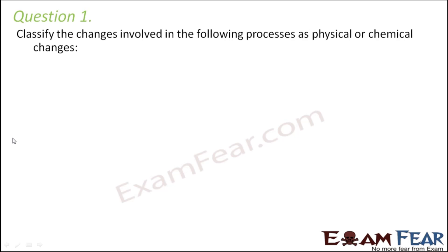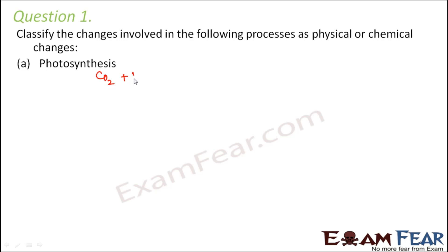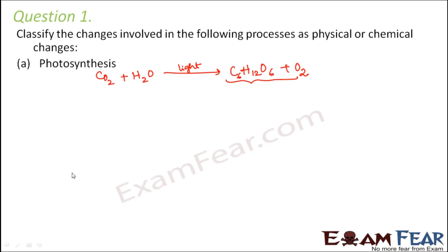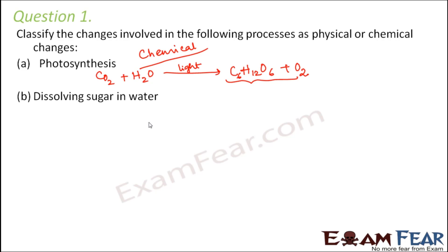Question number one: classify the changes involved in the following processes as physical or chemical changes. Photosynthesis — what happens during photosynthesis? It is the process by which plants prepare their own food using carbon dioxide and water. Carbon dioxide and water combine in the presence of light to form glucose (C₆H₁₂O₆) plus oxygen. New chemical substances are being formed, so photosynthesis is a chemical change.